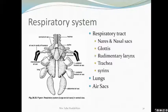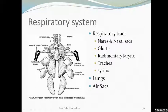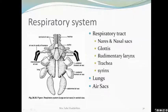The sequence to remember: first nares, then glottis, then trachea — and the larynx opens into the trachea. The trachea is a long, cylindrical, flexible tube-like structure supported by rings of cartilage. This trachea divides into two bronchi. Each bronchus enters into the lung on its respective side.